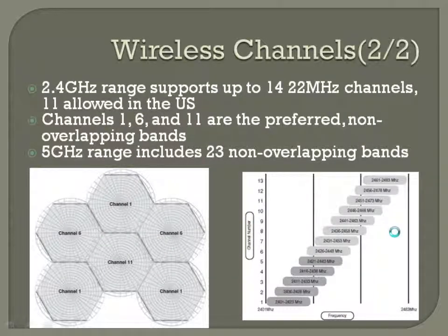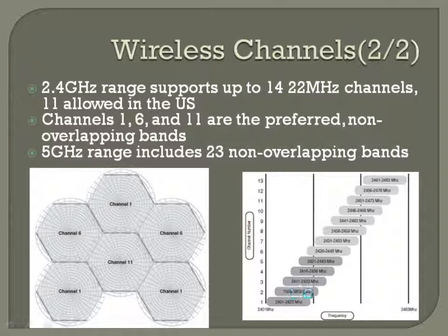The 2.4 GHz range supports up to 14 22-megahertz channels; the FCC allows 11 in the US. Channels 1, 6, and 11 are the preferred non-overlapping bands. If you look at the diagram — it's a bit hard to read on the monitor — you can see that channel 1 goes from 2.401 to 2.423, channel 2 from 2.406 to 2.428, so there is some overlap. Bands 1, 6, and 11 are the ones that do not have overlapping frequencies.